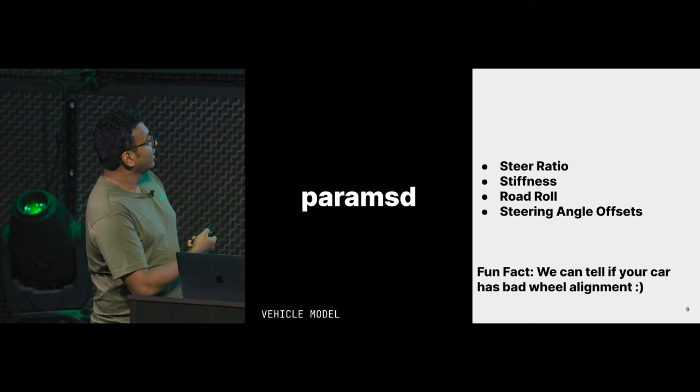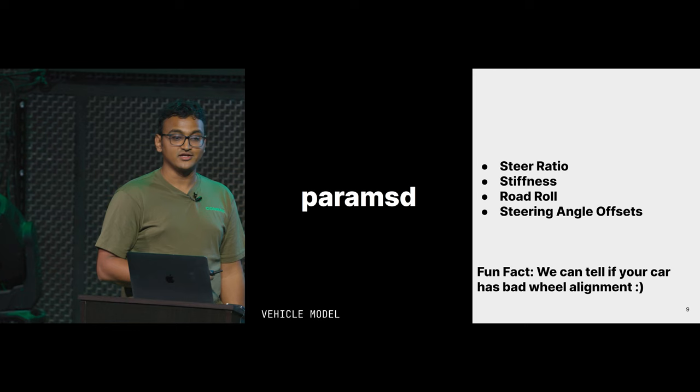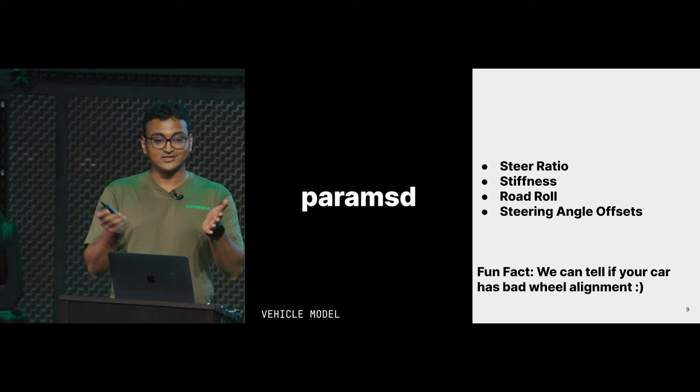A fun fact: as a consequence of learning all this, we also know when you have a bad wheel alignment. If your wheels are aligned badly and you want to go straight, you might have to hold your wheel at like a 10-degree angle. A lot of people come on Discord saying, 'Hey, I just installed OpenPilot, it drives fine, but when the wheel is straight it tries to go right.' We tell them what the problem is, and they come back a few days later saying they went to a mechanic and their wheel alignments were wrong, now their car drives perfectly. From your logs and the tolerances we know, we can tell you if your car has a bad wheel alignment.